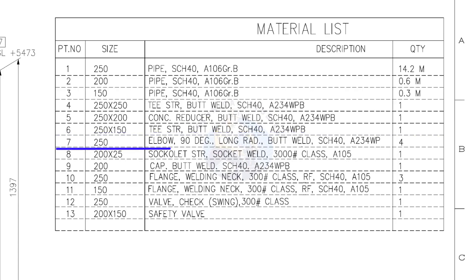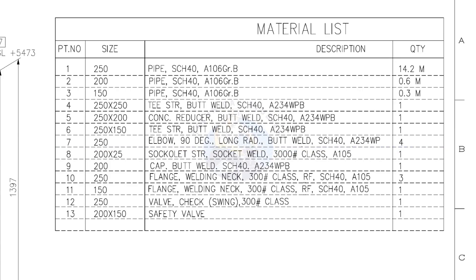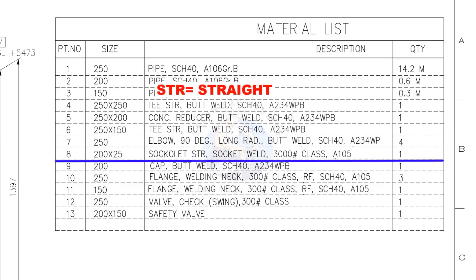Item number 7: 250 NB, 90 degree long radius elbow, butt welded type, schedule 40. Quantity: 4 numbers. Item number 8: 200 into 25, sokolet, socket welded, class 3000 pound. Quantity: 1.